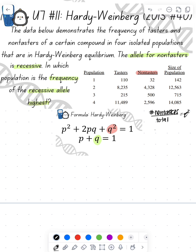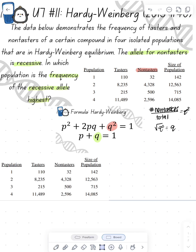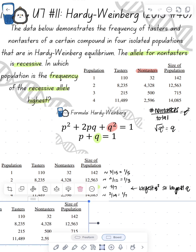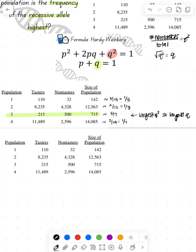So we're going to do the number of non-tasters divided by our total population, and that will give me my Q squared value. Once I find Q squared, I just take the square root and that gives me my Q value. So I don't want to do the math for all these — we're going to estimate. So 30 divided by 142 is approximately 3/15ths, so that's about one-fifth. 4,000 divided by 12,000 is approximately 4/12ths, which is like one-third. Then 500 divided by 700 is about five-sevenths. And 2,000 divided by 14,000 is about one-seventh. So five-sevenths would be my largest Q squared, which means that should be my largest Q. So if I was a student, I would just pick population three and move on.